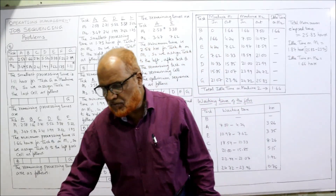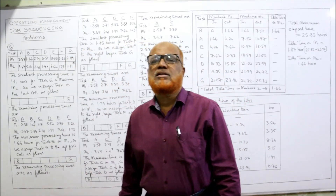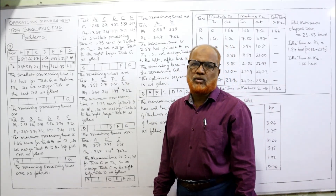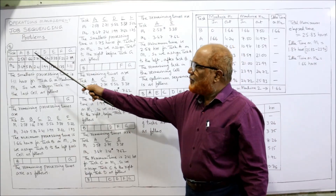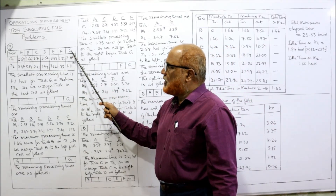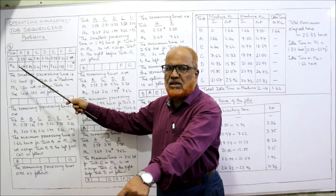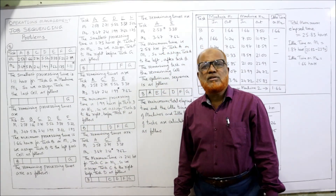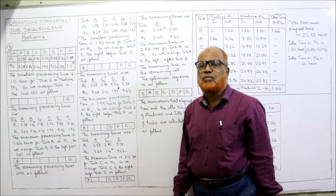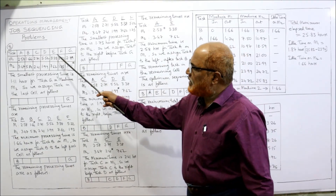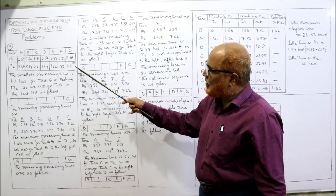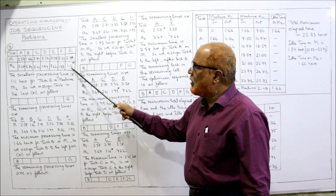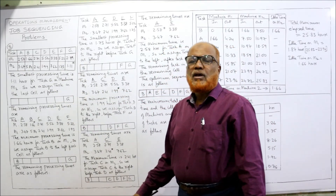The processing times are given — for example, task A: 2.58 on M1 and 3.47 on M2, and so on for all tasks. First of all we need to find the optimum sequence. The first step is to select the smallest processing time among all tasks. The smallest time in all these values is 1.11, which is for task G on machine M2.